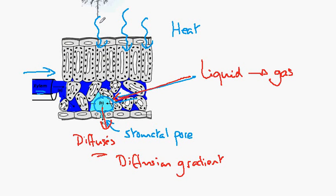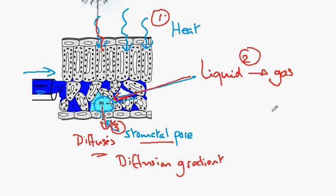So the sunlight warms the leaf — that's the first thing. The second thing is the change of the water from the liquid phase into the gas phase. And the third thing is the diffusion of the water vapour through the stomatal pore to the outside atmosphere, down a diffusion gradient.